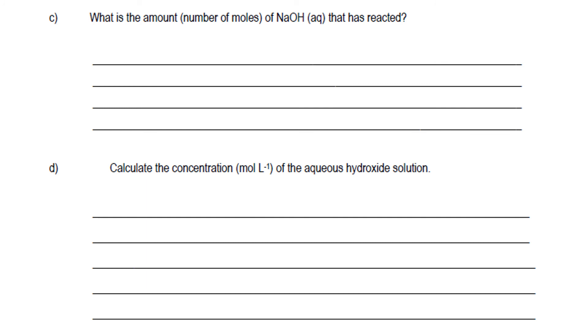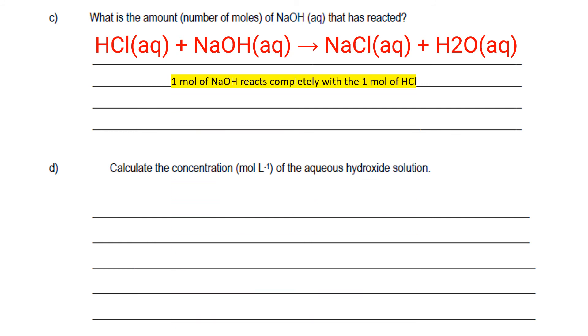What is the amount of NaOH that has reacted? Again, amount means number of moles. From the equation, we know that HCl reacted with NaOH which means 1 mole of NaOH reacts completely with 1 mole of HCl. So whatever result or value you got in part B of the question, you will write it here.